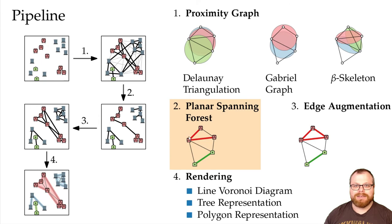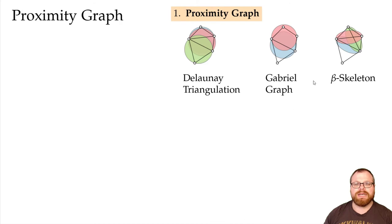Let's go back to our pipeline. We now want to have a closer look at the first step, proximity graphs. The Gabriel graph is a subgraph of the Delaunay triangulation. Now the Delaunay triangulation is known to be planar. Now the whole second step, finding a planar spanning forest is trivial as long as the graph is planar. So these don't give us very interesting future steps. Instead we focused on beta skeletons.